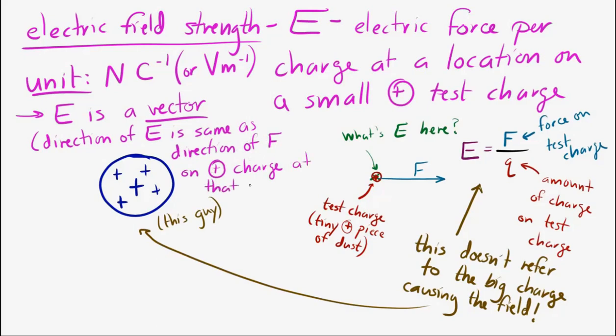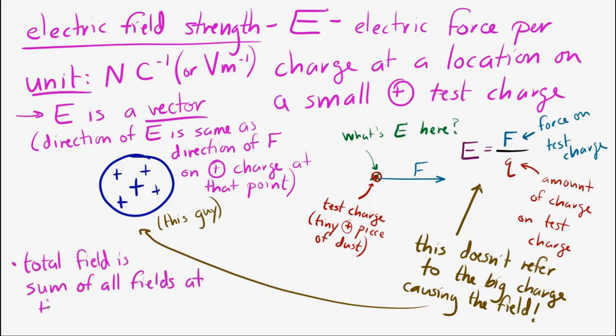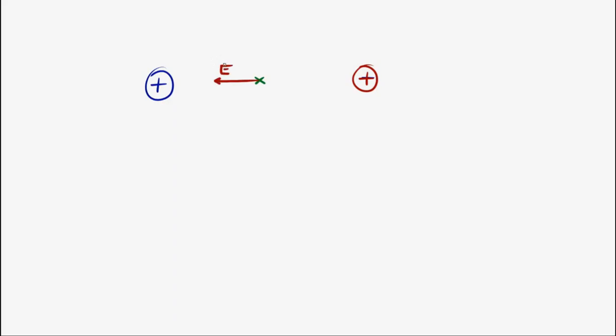Similar to gravitational field strength, the total electric field at a location is the sum of all of the electric fields at that location. For example, imagine we have two positive charges separated by some distance. If I wanted to know the electric field at a location between them, I would have to figure out the electric field from one of the charges and the electric field from the other charge, and then add up those two fields.